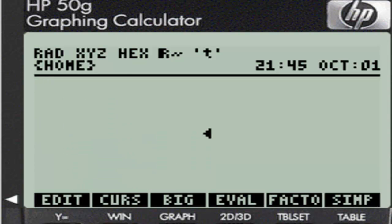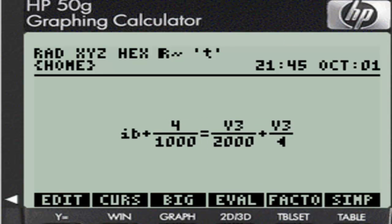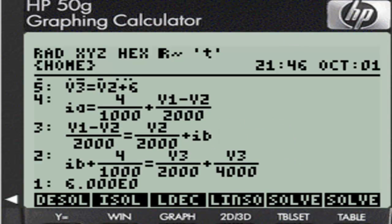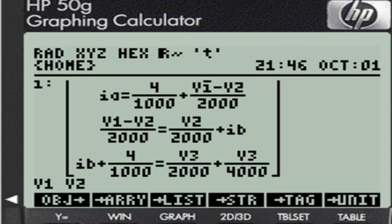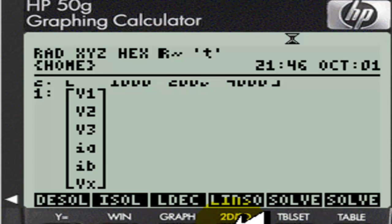And last, we go one last time to the equation writer and write IB plus 4 over 1000. All of that is equal to V3 divided by 2,000, and all of that plus V3 divided by 4,000. We create a system of six equations. Program type. Make me an array. And now we have to ask the calculator the unknowns we want to solve for. And those are V1, V2, V3, IA, IB, and VX. Six unknowns. Enter. Make me an array. We are ready to go to the symbolic solver.